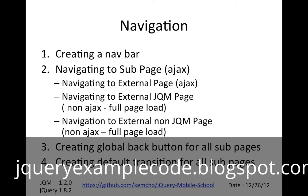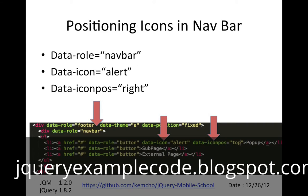Now we go on to the navigation topic. There are four main parts. First, how do you create a navigation bar, and then how you navigate between different pages — pages that are internal or external to your app, using Ajax, non-Ajax, or a full load. How do you add a back button? And how do you handle transitions? So the four main parts are: navbar, different kinds of pages, back button, and transition.